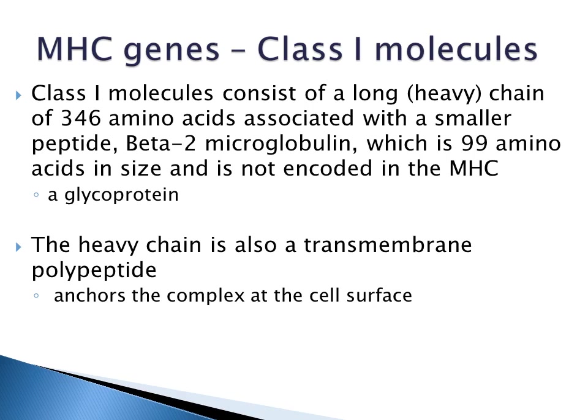Class 1 molecules consist of a long or heavy chain of 346 amino acids associated with a smaller peptide, the beta-2 microglobulin, which is 99 amino acids and is not encoded in the MHC. The class 1 heavy chain displays short branched chain sugars, making the molecule a glycoprotein. The heavy chain is also a transmembrane polypeptide that anchors the complex at the cell surface.